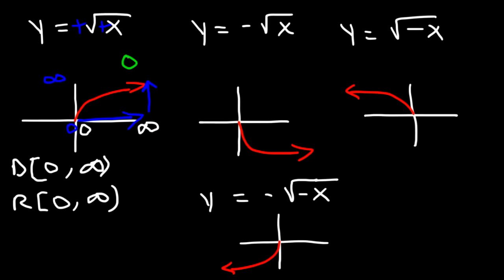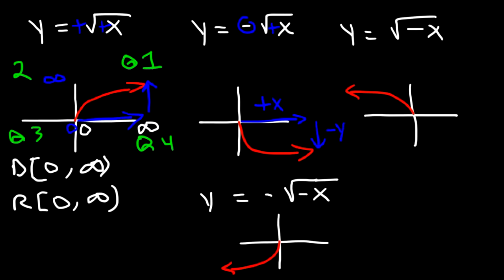Quadrant 1 is top right, quadrant 2 is top left, quadrant 3 is bottom left, and quadrant 4 is bottom right. For the second case, x is positive and y is negative — x is positive towards the right, y is negative below the x-axis — so it points towards quadrant 4. For the third case, x is negative and y is positive — x is negative towards the left, y is positive above the x-axis — so it goes towards quadrant 2. For the last case, x is negative towards the left and y is negative below, so it goes towards quadrant 3.